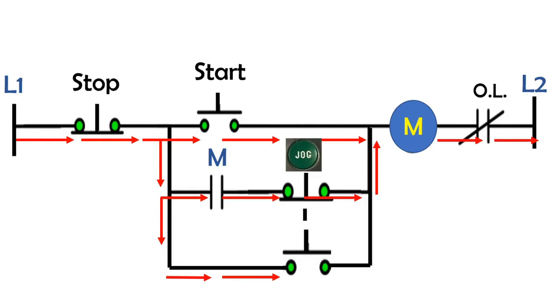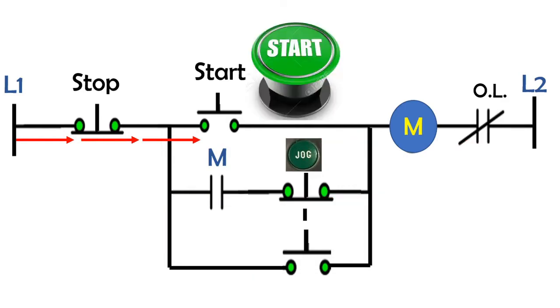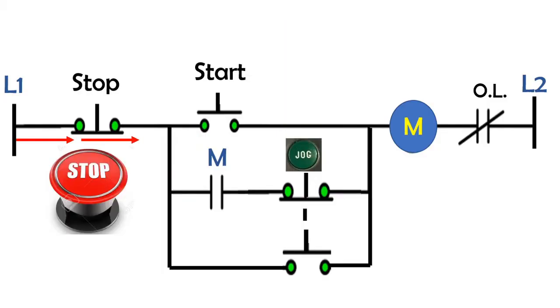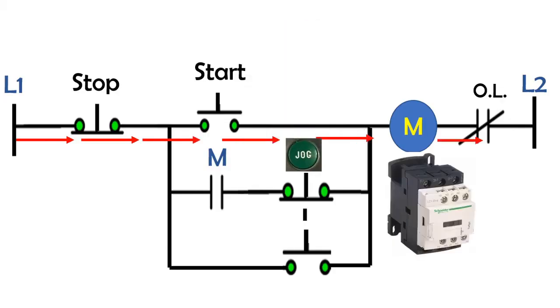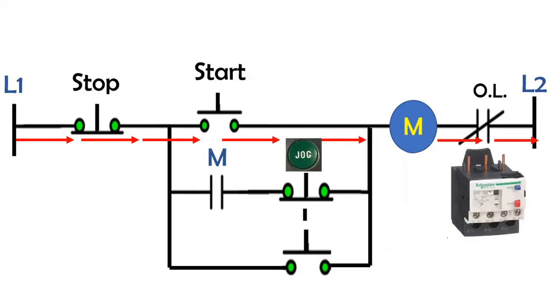Let's get started. When you press the start button, the current flows from line 1 goes through the stop push button that is connected in series with the circuit, through the start push button that is connected in parallel, through the magnetic contactor, overload relay, then back to the power supply line 2.